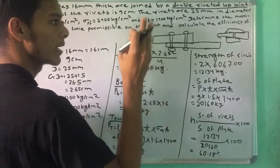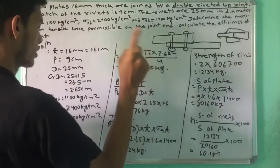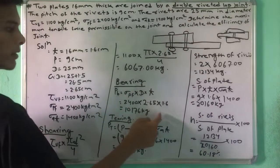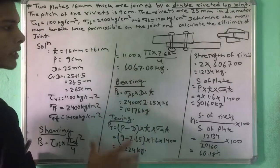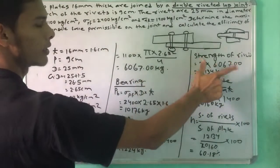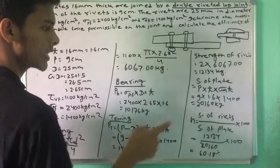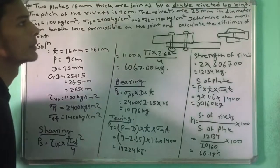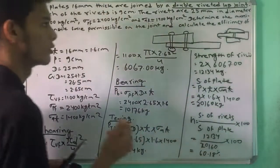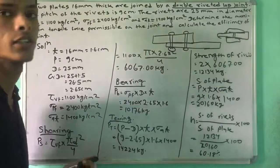When we see a double riveted joint, we have a lap joint. We have to multiply by two for shearing and bearing, then compare all three values. We calculate the efficiency as strength of rivet divided by strength of plate, into 100 to get the percentage. Thank you for watching.